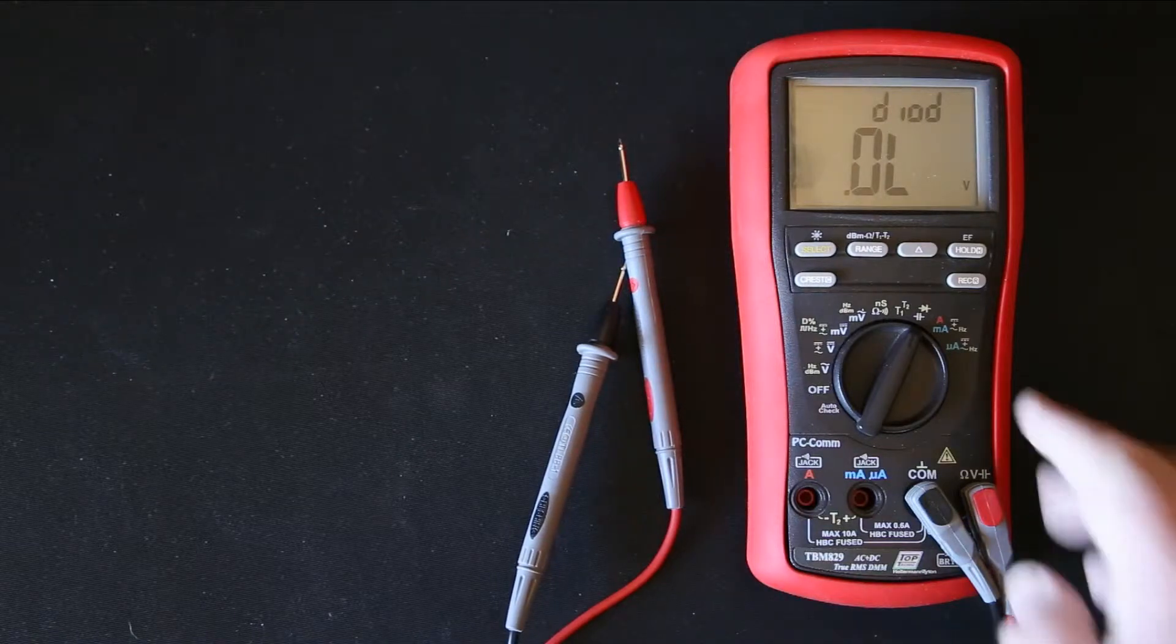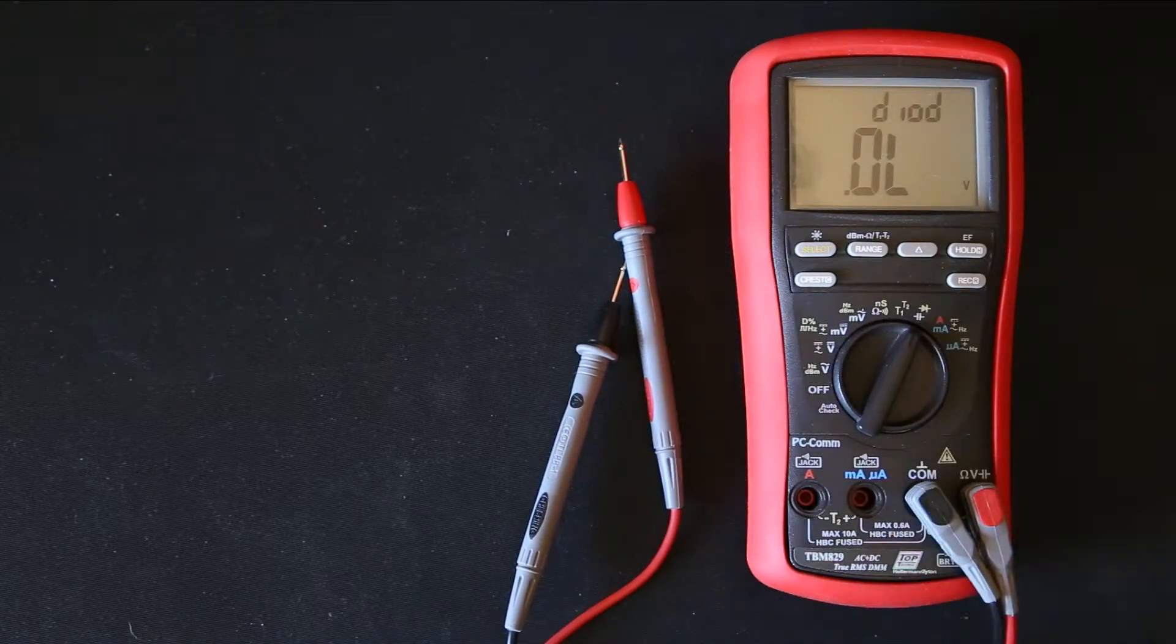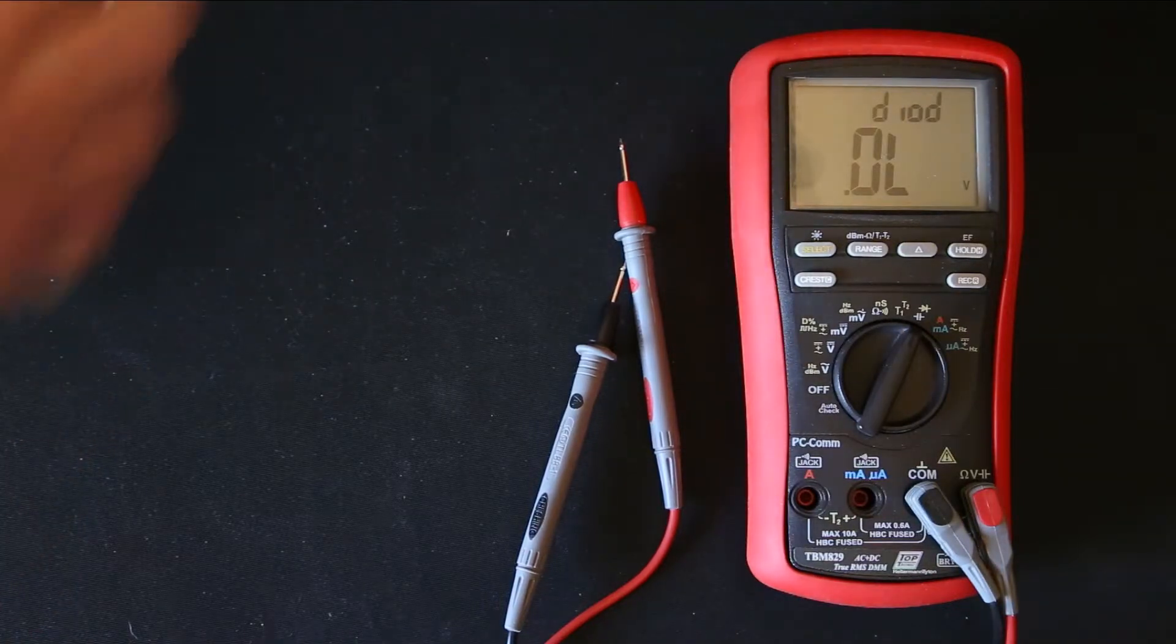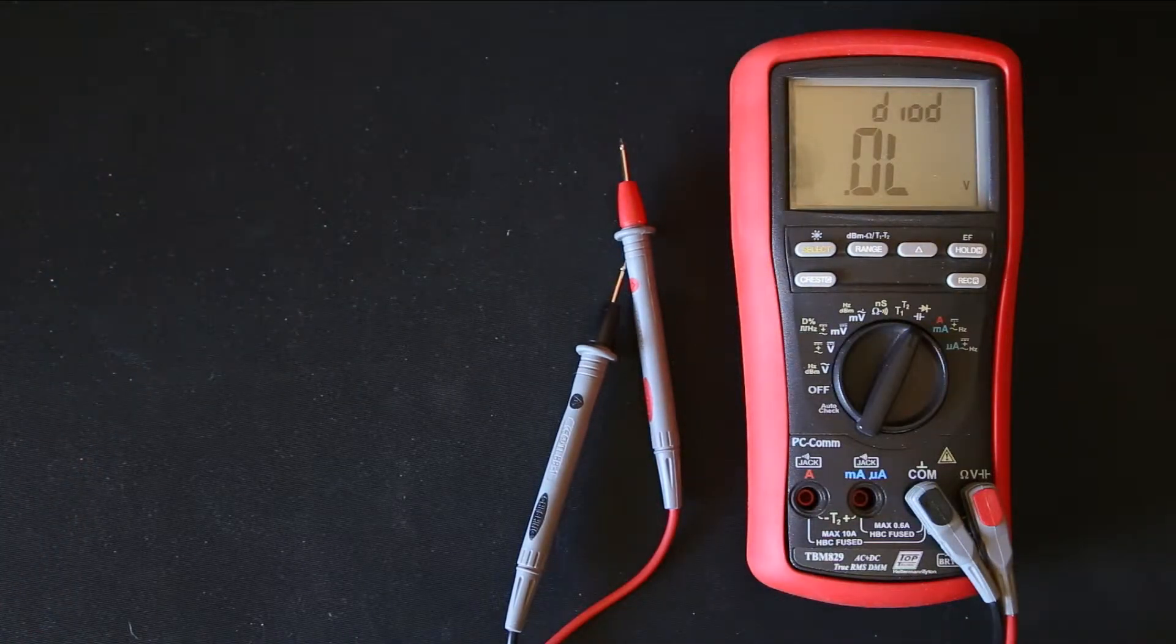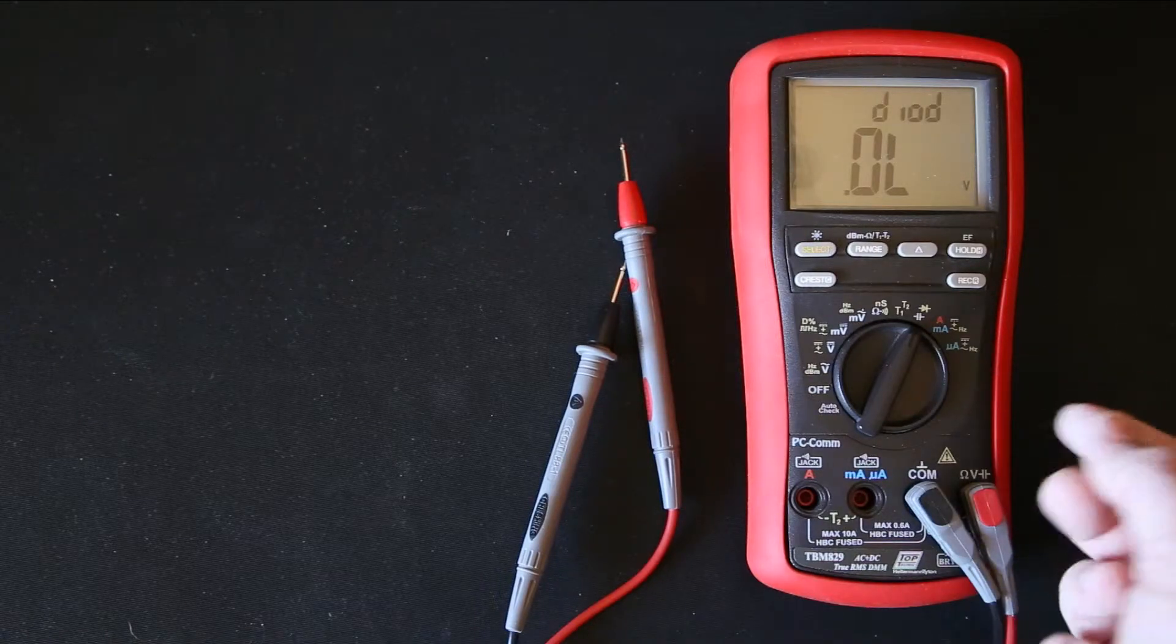The diode test is useful for checking transistors. You can also use it for checking MOSFETs if you know how. It's quite a simple procedure. You have to charge up the MOSFET and then you can check the gate resistance or voltage drop or whatever the case may be.